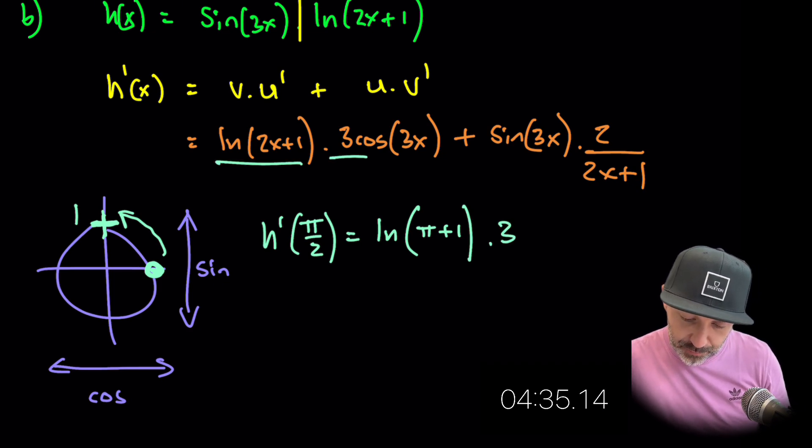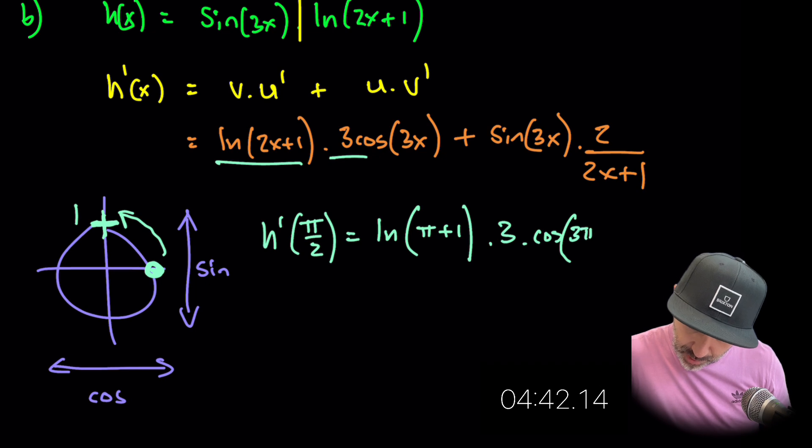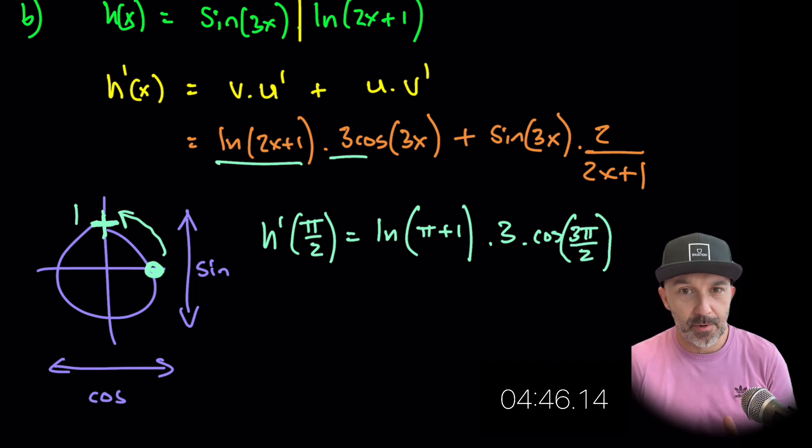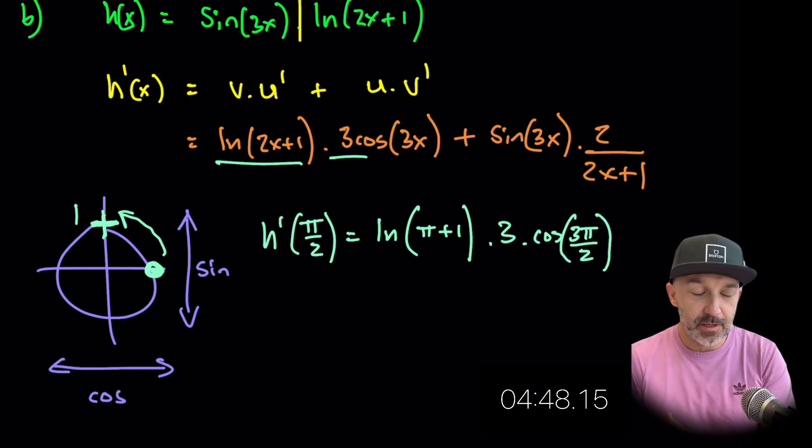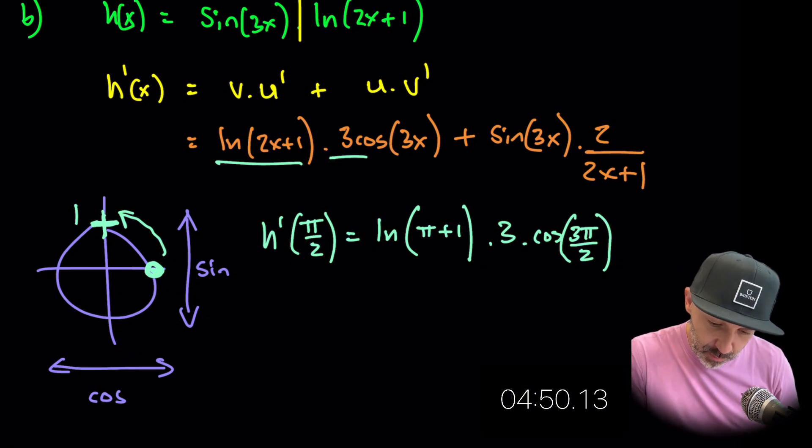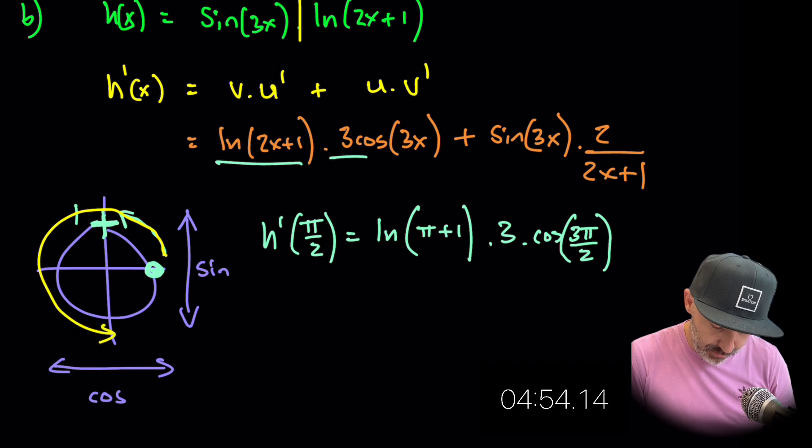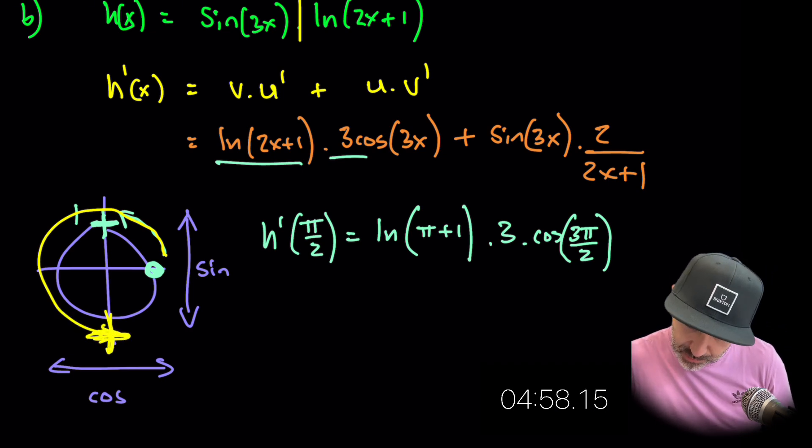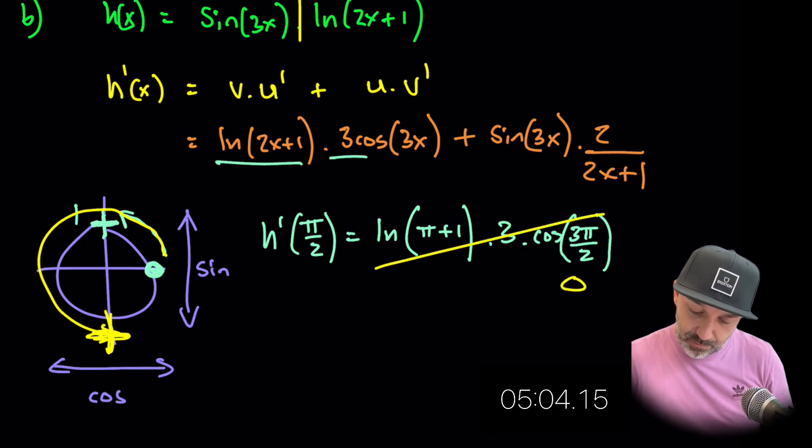Now we've got cos of 3 pi over 2. So 3 pi over 2. Now that is 270 degrees. Remember it's 90 times 90 plus 90 plus 90. So we're going to be at 270. We're all the way around here. So that means that cos is still 0. So this whole expression is going to be 0 because this is 0. So 0 times 3.